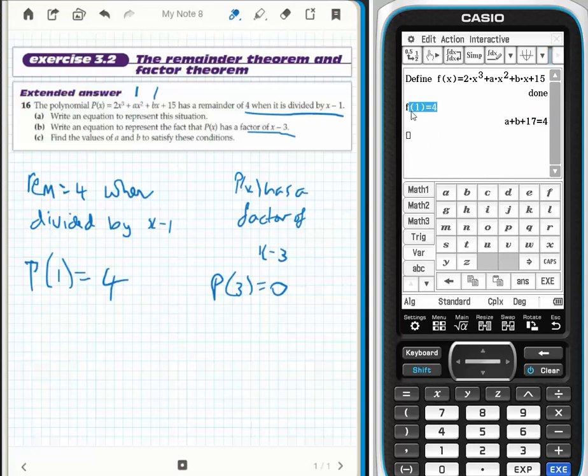I also know from the question that when it's divided by X minus 3, therefore F(3) will equal 0. This gives me my second equation in part B.